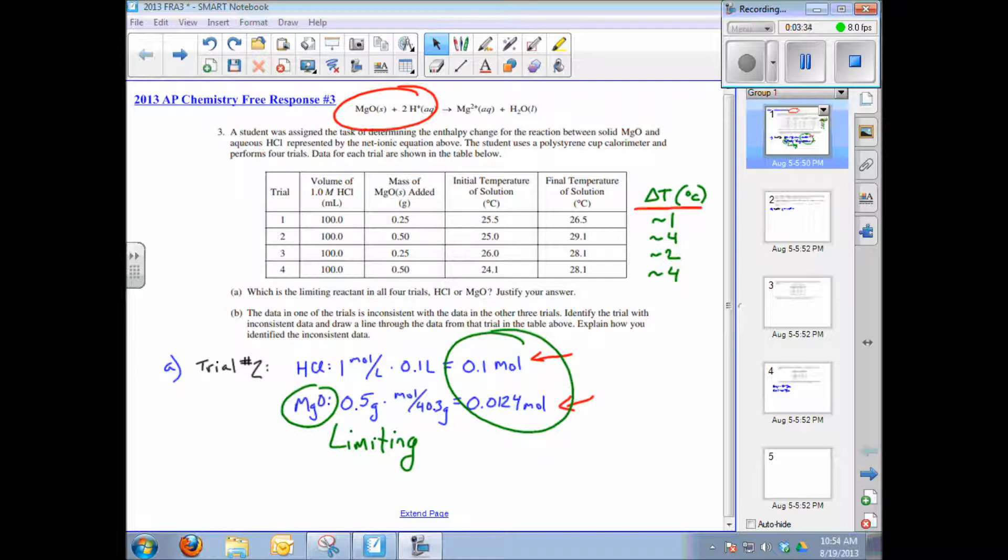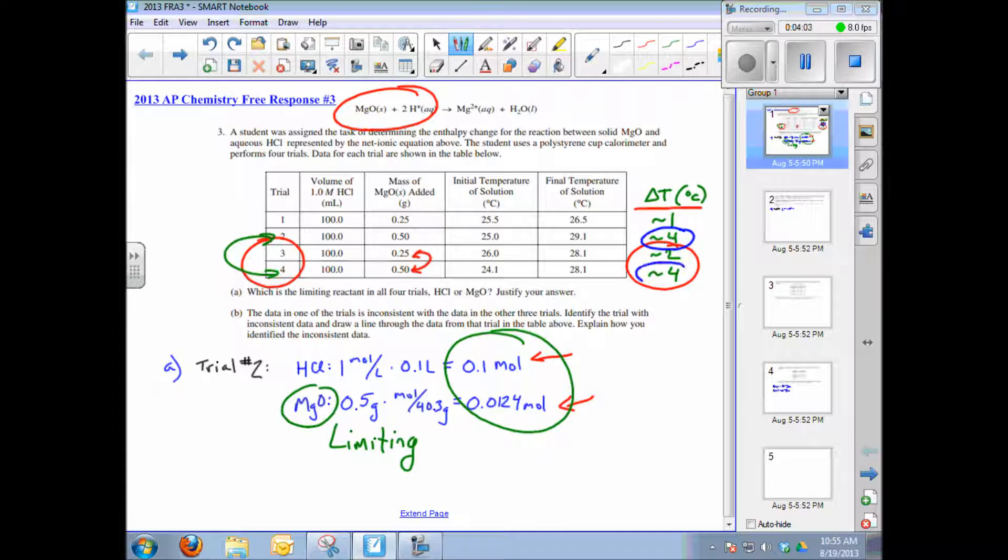If you look at the trials, trial three is a repetition of trial one, trial four is a repetition of trial two. In trials three and four, when we double the amount of limiting reactant, we double the amount of heat generated—the temperature increases by a factor of two. In the repetition of trial two, which is trial four, we had the same result: we did get 4 degrees Celsius temperature change in the repeated trial.